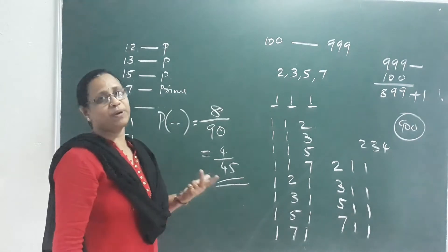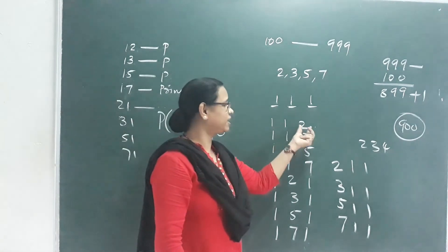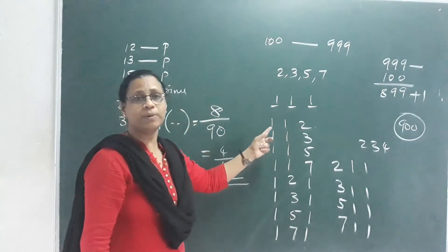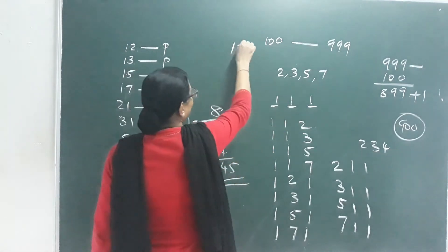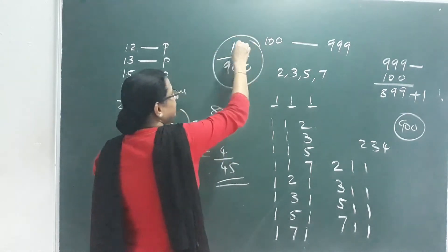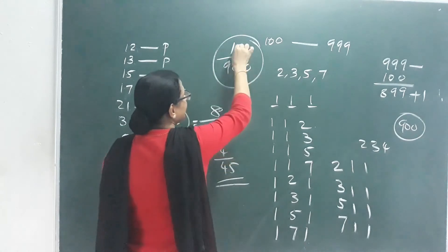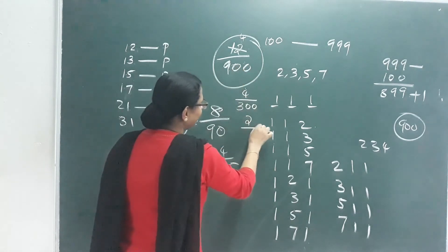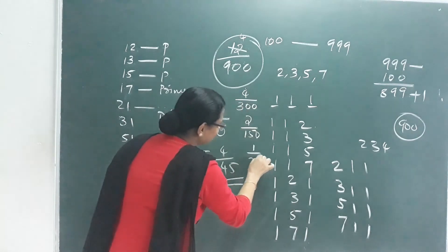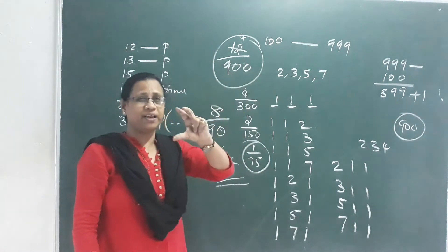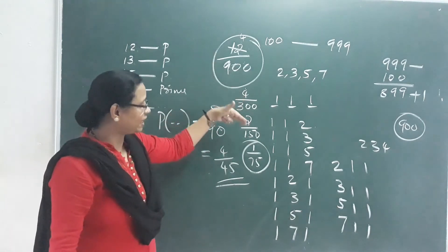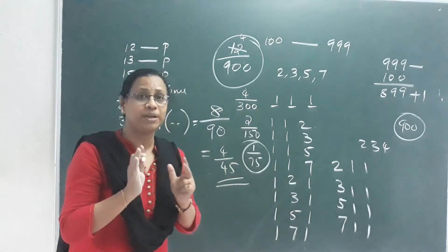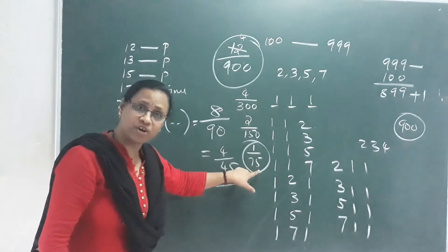The total chance of getting a prime product from a three-digit number is 12 out of 900. Simplifying: 12/900 = 2/150 = 1/75. This fraction is between 0 and 1, confirming it is a valid probability.